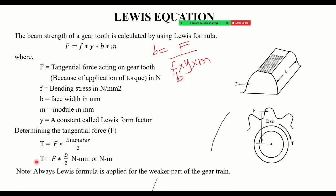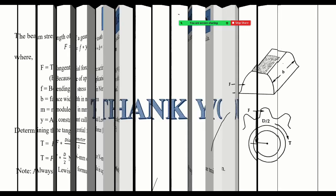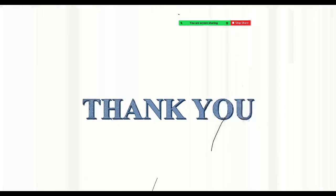In summary, I have explained Lewis's equation. You need to write down the equation F = f × B × M × Y, identify each term — small f is the bending stress, Y is the form factor, B is the face width, M is the module — and use it to solve problems.